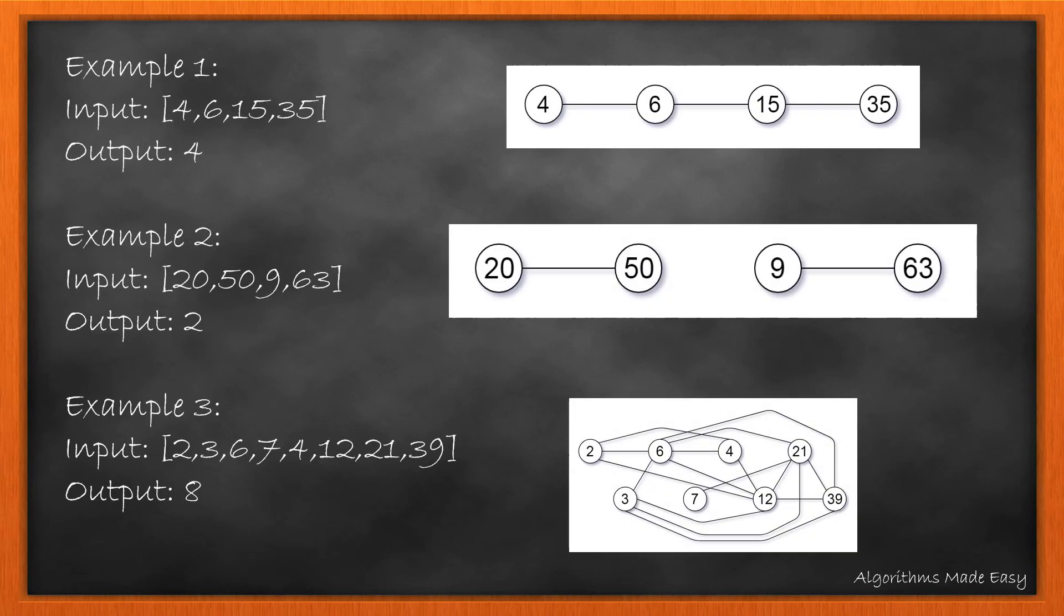In the given sample examples, we see visually how the components are connected. In the first example, we can see that all the values have at least one common factor, so the result becomes 4.